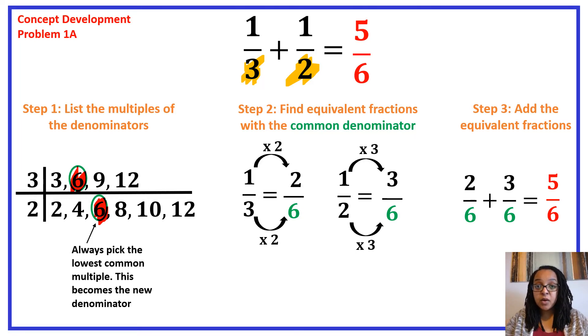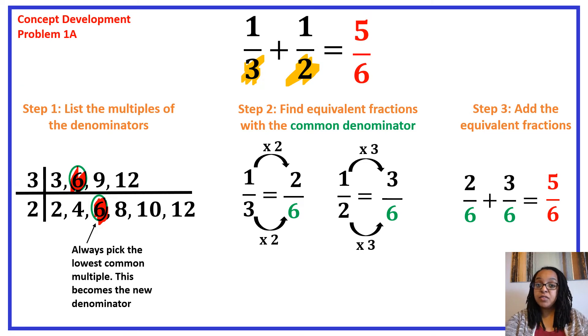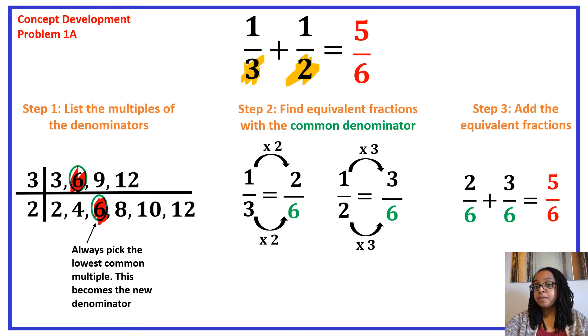The main takeaway is that when denominators are not the same, you need to find common denominators by using equivalent fractions. Once you have those equivalent fractions, then you add them.